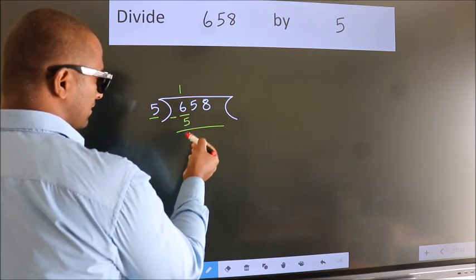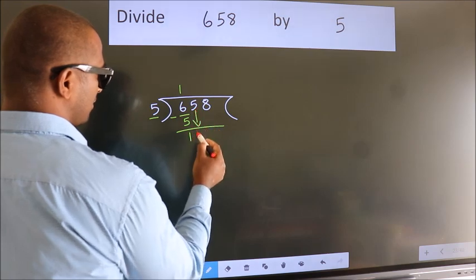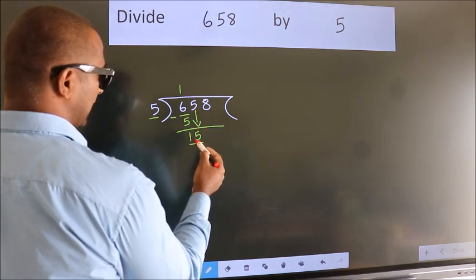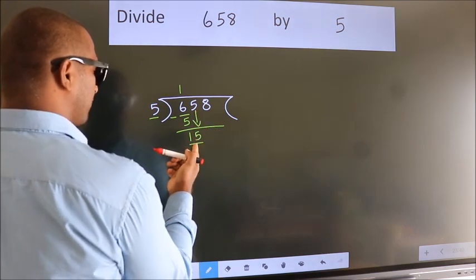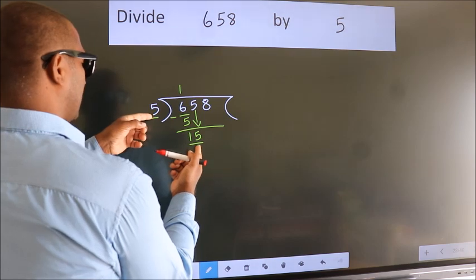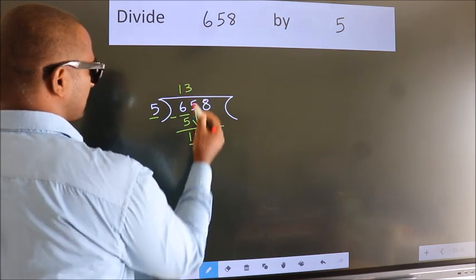After this, bring down the beside number. So, 5 down, giving us 15. When do we get 15 in the 5 table? 5 times 3 is 15.